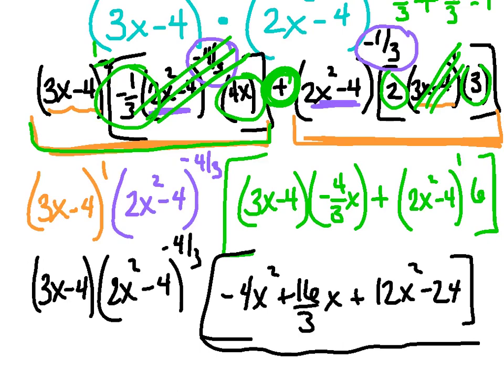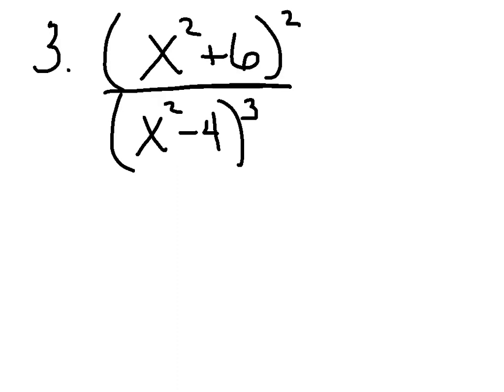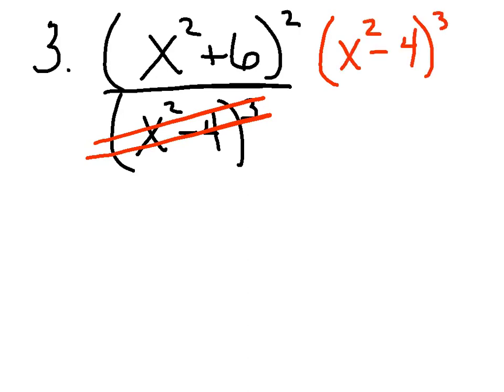If you don't pull the GCF out, you probably won't be able to match the multiple choice answer, so make sure you're pulling out the GCF. Let's try one more together: the quantity x squared plus 6 squared, divided by the quantity x squared minus 4 cubed. Again, rewrite it by bringing the bottom up and avoiding quotient rule: x squared plus 6 squared, times x squared minus 4 to the negative third. You've got product rule — go ahead, pause and check your math.